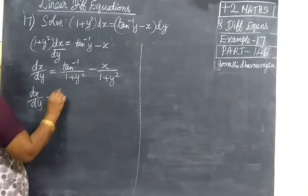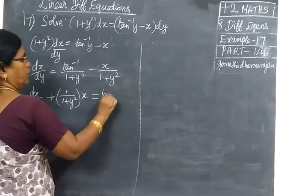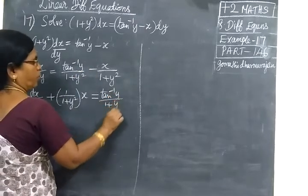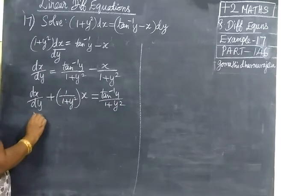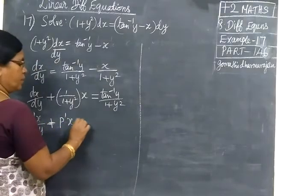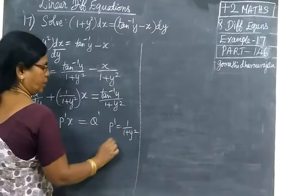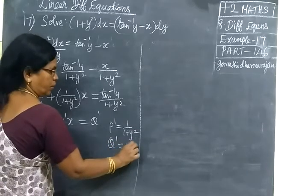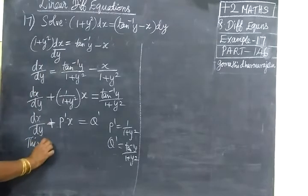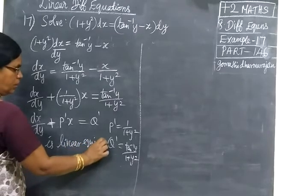This time we write dx by dy. Rearranging: dx by dy plus x divided by (1 plus y squared) equals tan inverse y divided by (1 plus y squared). This is of the form dx by dy plus P·x equals Q, where P equals 1 divided by (1 plus y squared). Q equals tan inverse y divided by (1 plus y squared). So this is a linear equation in x.